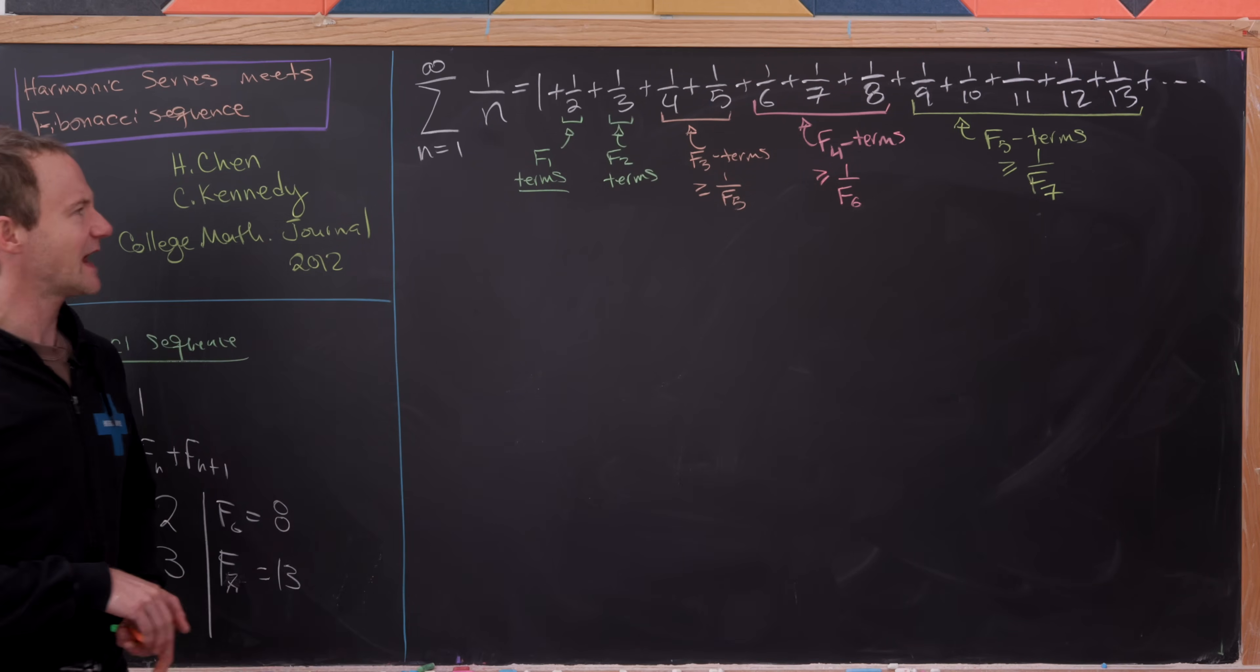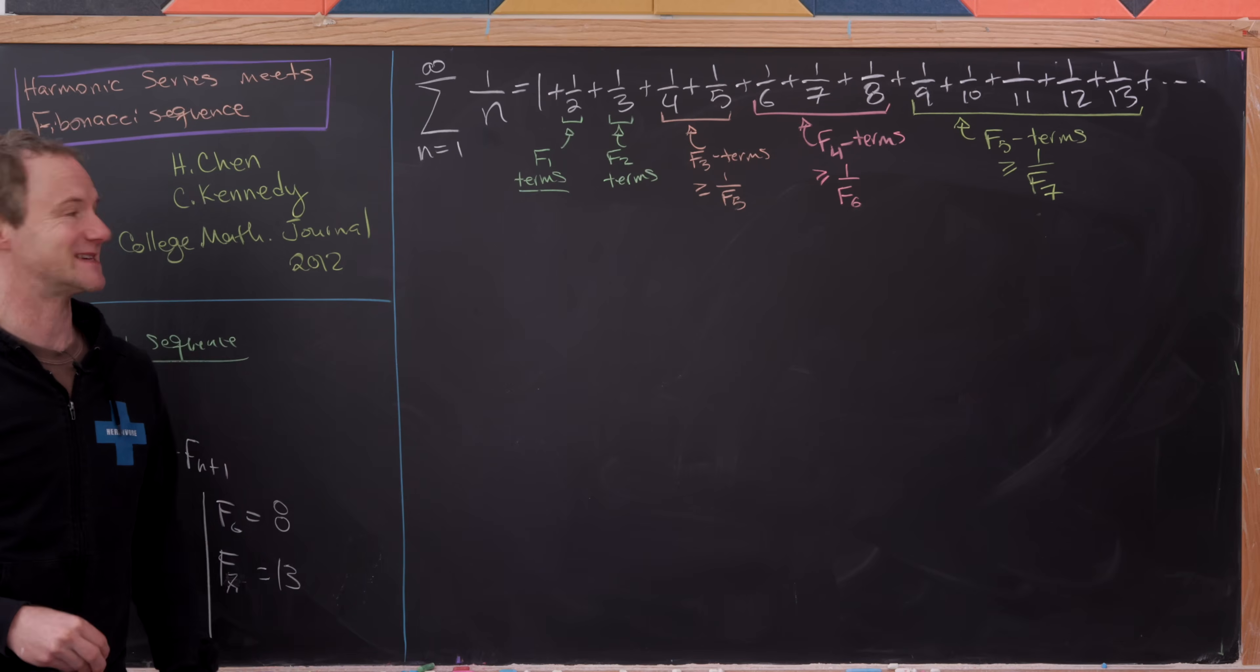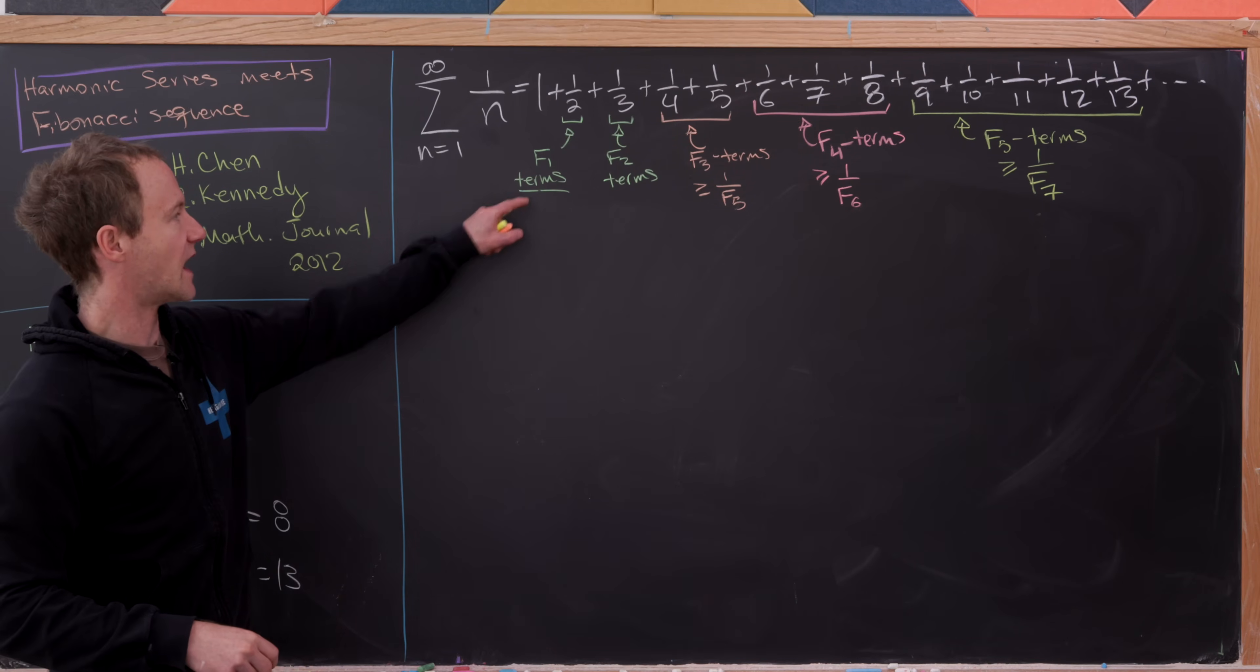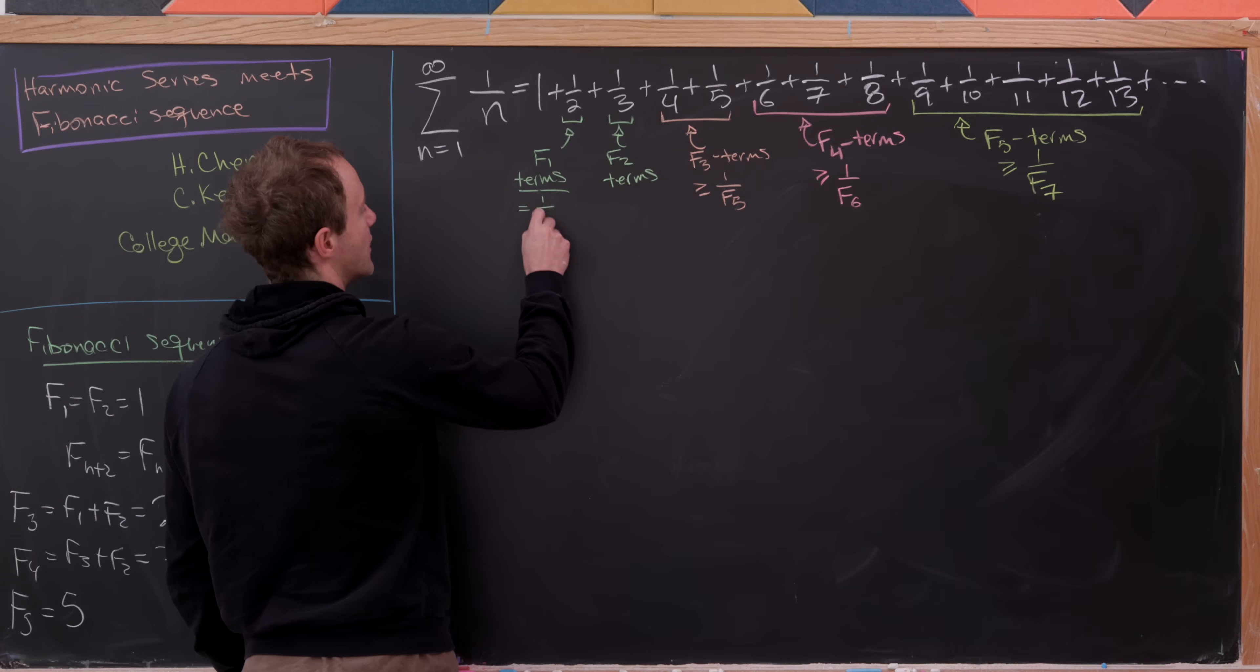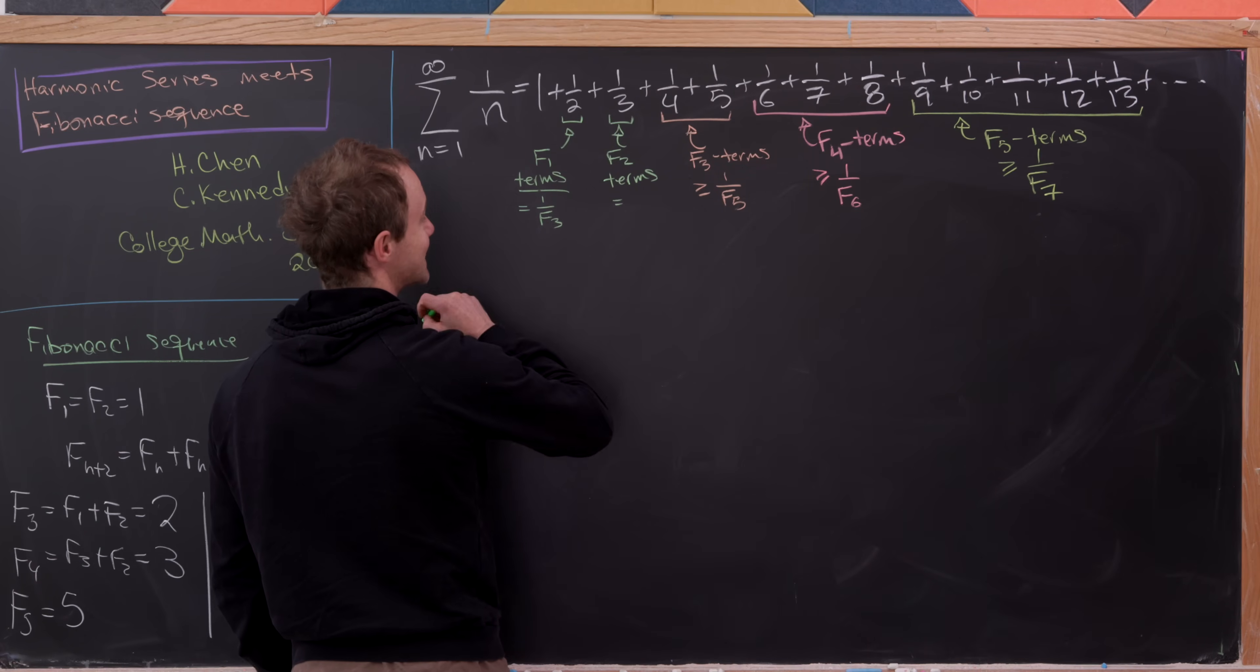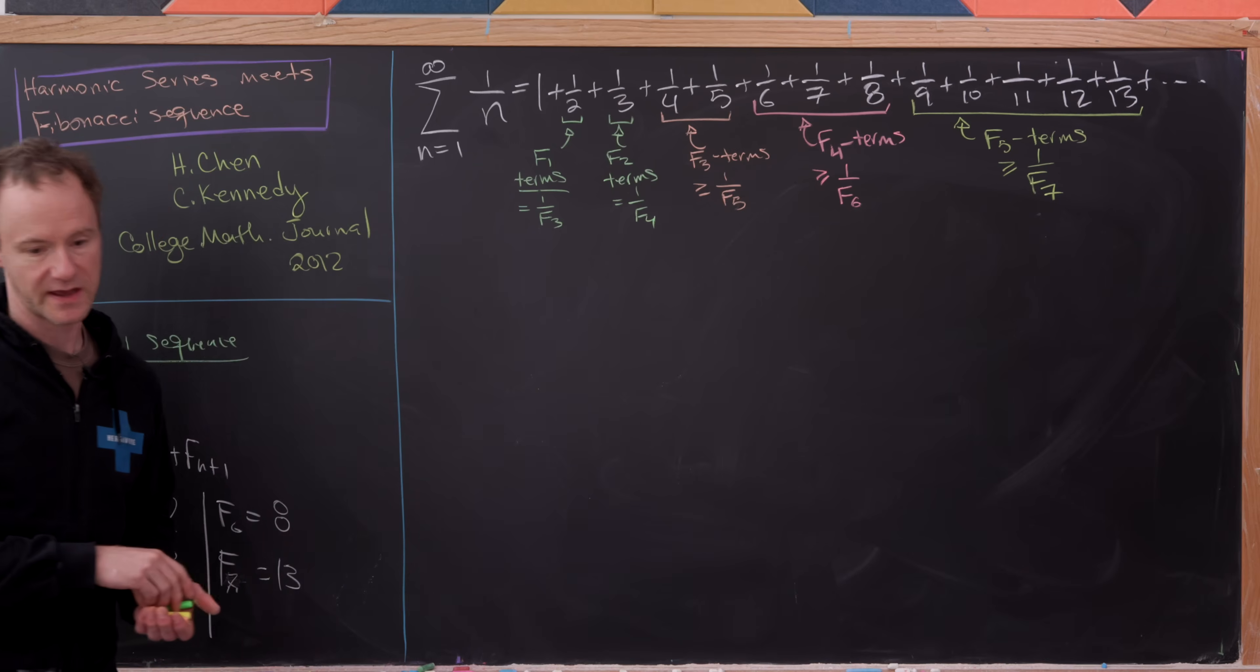And then I guess these first two, it's not really just bigger than or equal to, it's exactly equal to. So notice here we've got a term which is exactly equal to 1 over F3. And here we have a term which is exactly equal to 1 over F4.